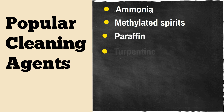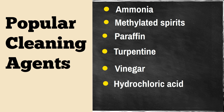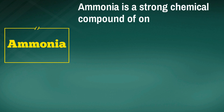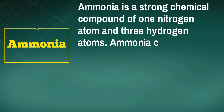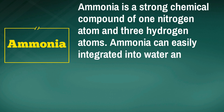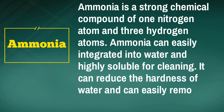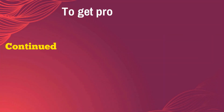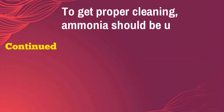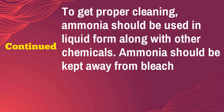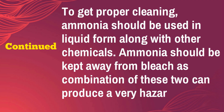Ammonia is a strong chemical compound of one nitrogen atom and three hydrogen atoms. It can easily integrate into water and is highly soluble. For cleaning, it can reduce the hardness of water and easily remove lubricants. Ammonia should be used in liquid form along with other chemicals, and must be kept away from bleach, as the combination of these two can produce a very hazardous gas.